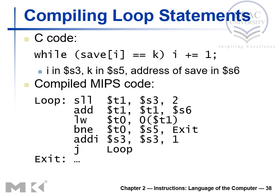This slide looks at how we can compile a loop statement. We have a while statement which says: while save[i] is not equal to k, i is incremented by one. How can we generate MIPS code for this? Instead of having an integer index in the save array, we have a variable i, whose value is incremented every time the loop executes until the condition is satisfied.